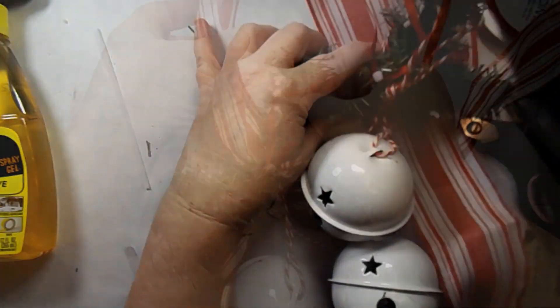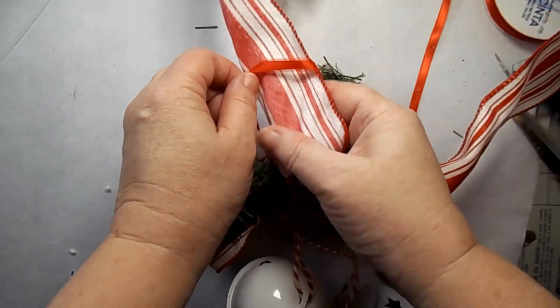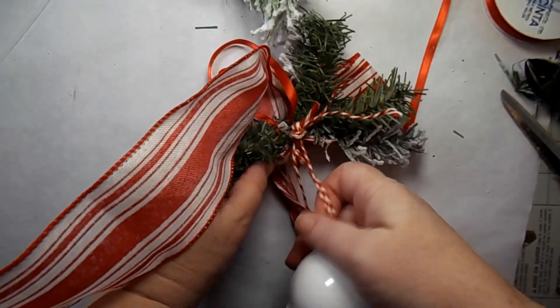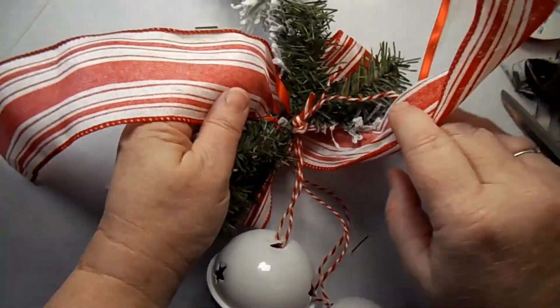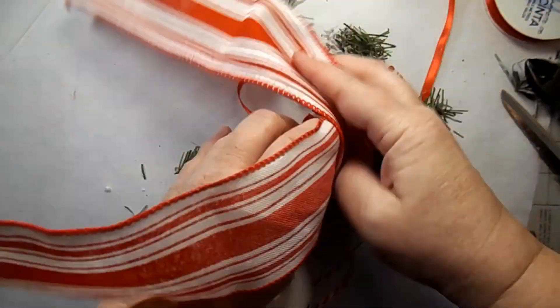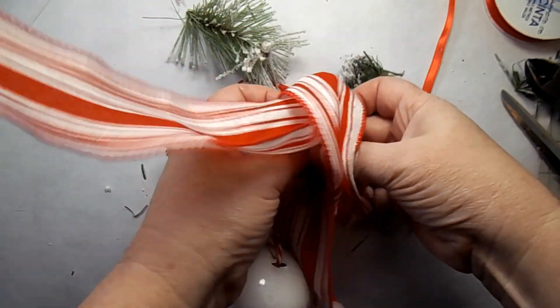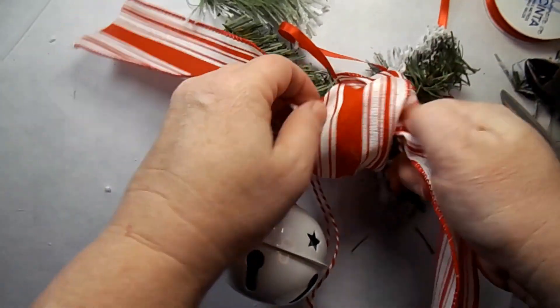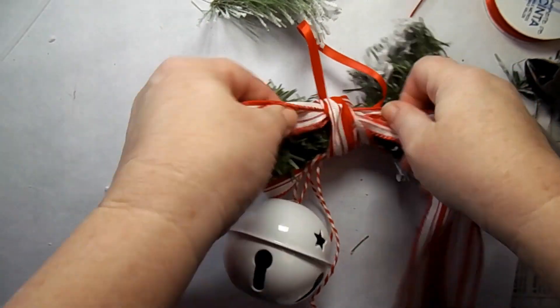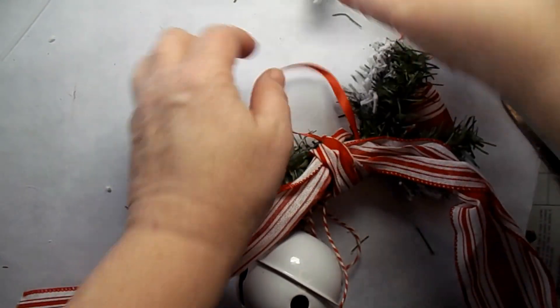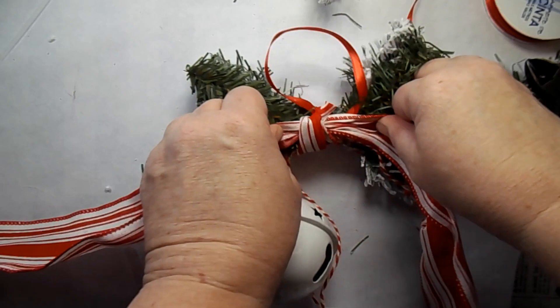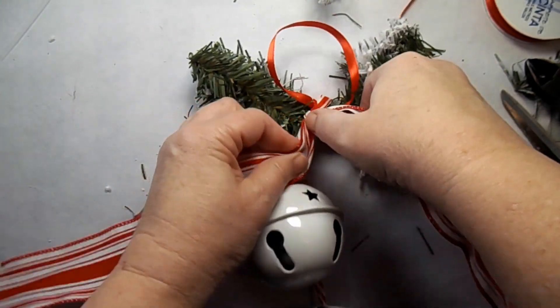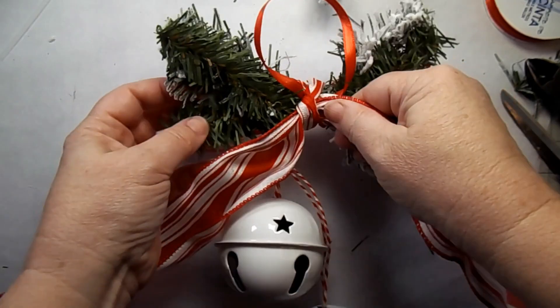Now pull, this is going to be the tails of our bow. We pull that, now pull it through the center of that loop. And now we'll just tie it tight on the back so that we have the tails for our bow. This also helps hold all of your greenery in place.